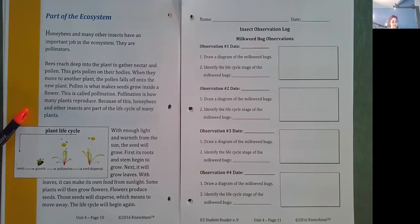Because of this, honey bees and other insects are part of the life cycle of many plants. With enough light and warmth from the sun, the seed will grow. First, its roots and stem begin to grow. Next, it will grow leaves. With leaves, it can make its own food from sunlight. Some plants will then grow flowers. Flowers produce seeds. Those seeds will disperse, which means to move away. The life cycle will begin again.